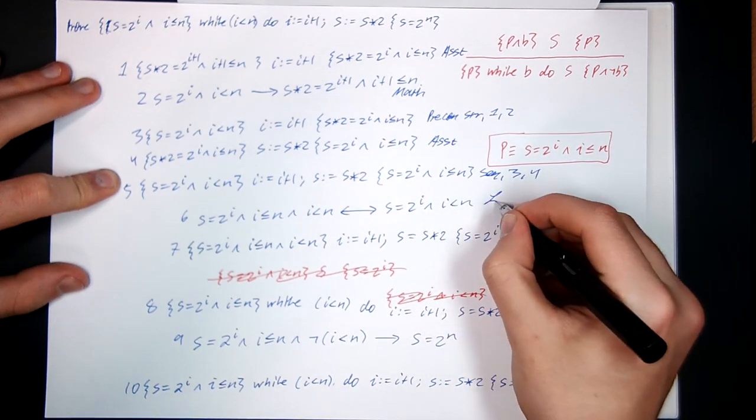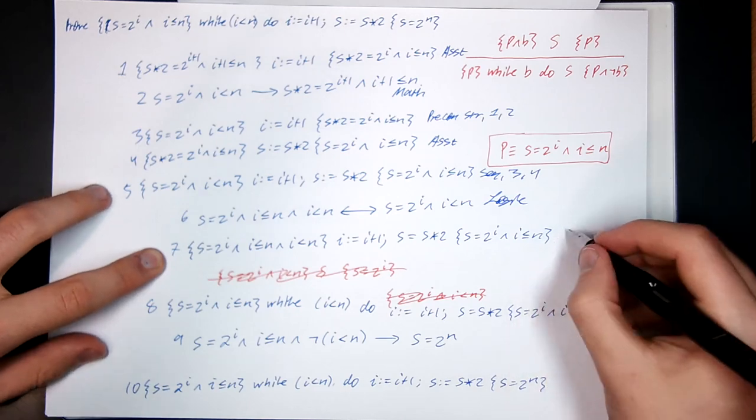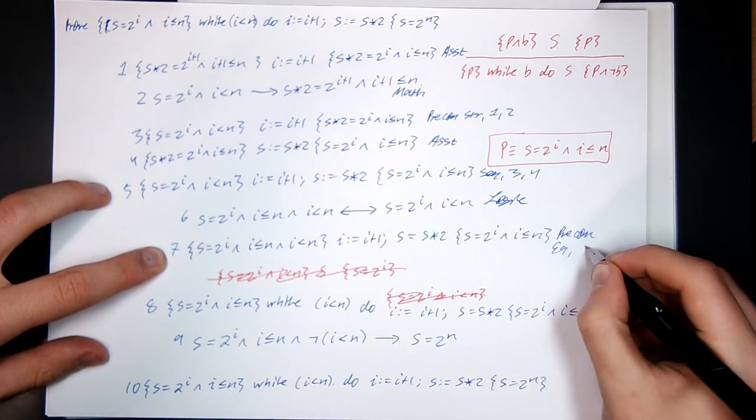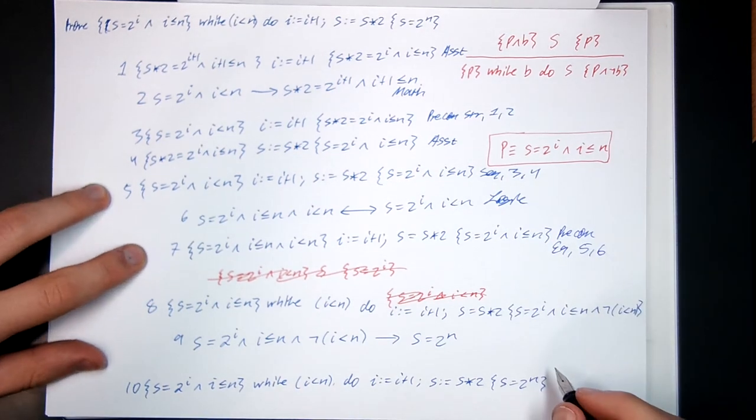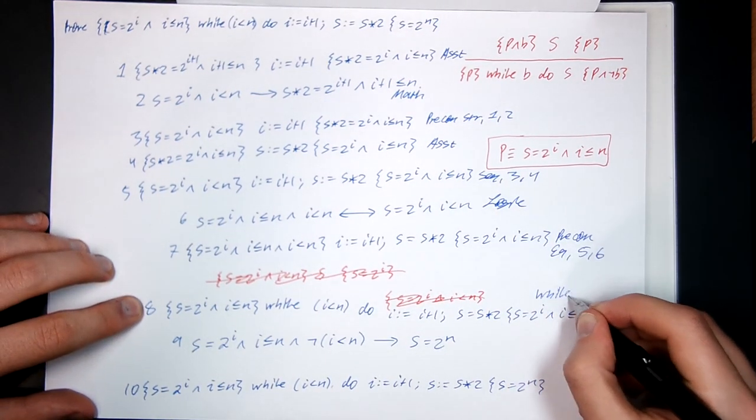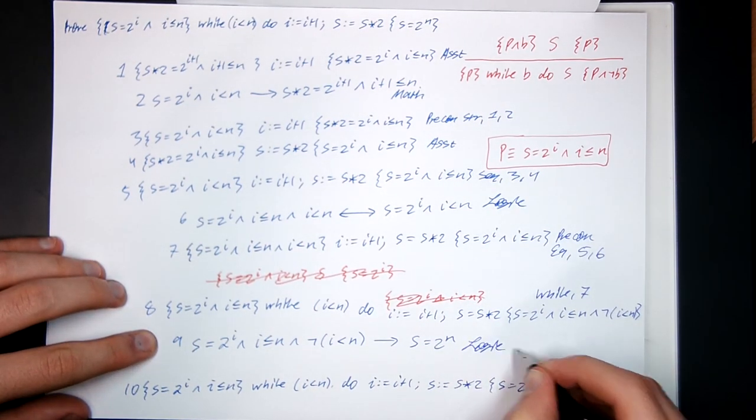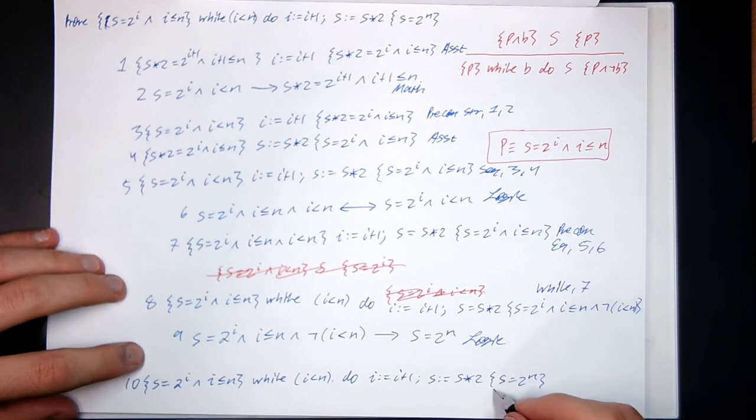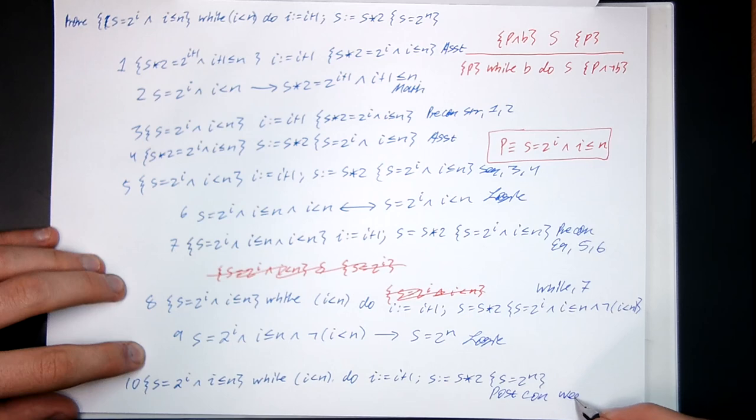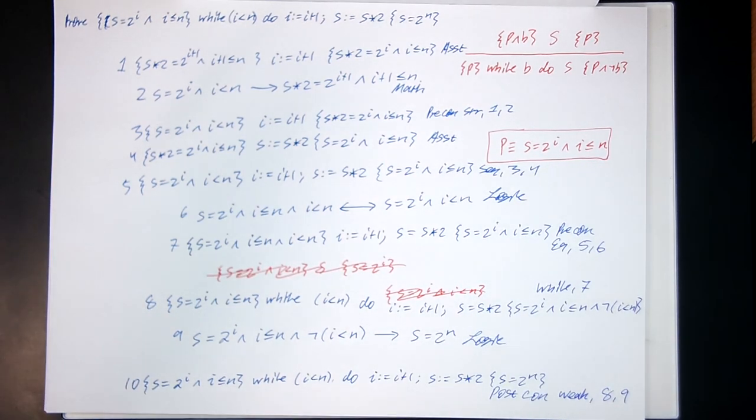This was logic, precondition equivalence of 5 or 6 I suppose. This is the while rule of 7. And then this is going to be logic. And then this is post-condition weakening using 8 and 9. And there we go.